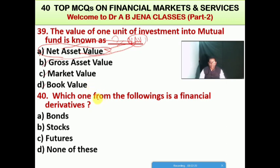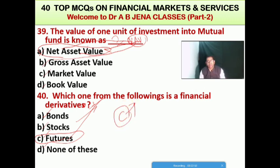Last but not least, which one from the following is a financial derivative? A: bond, B: stock, C: futures, D: none of these. C is the right option — futures are a financial derivative. So these are the 30 vital MCQs from the financial market, institution and services. I am hopeful that you have learned a lot and this discussion will be very helpful and useful to all of you. If during the discussion you find any mismatch or gap, kindly give your valuable ideas and suggestions in the comment section. If you have not subscribed to my channel, kindly subscribe, forward, and share. Thanks a million to all of you.